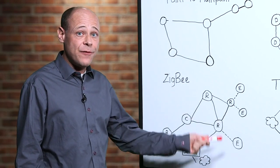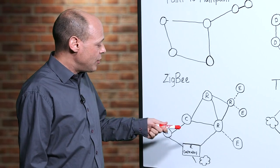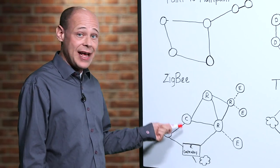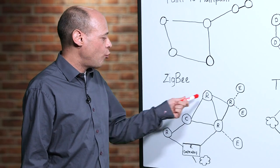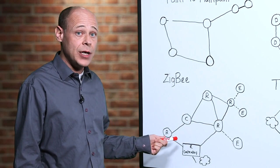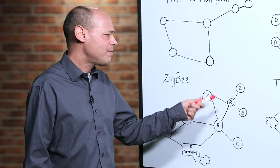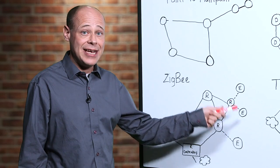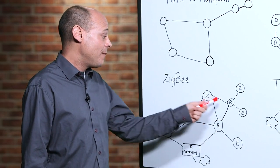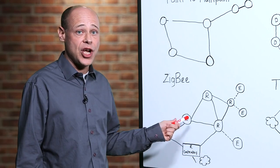Zigbee uses radios that are in different defined roles. So there are coordinators, which set up the network and then allow routers and end devices to join. Router radios, which can support maybe up to 20 or so end devices each, and can route data along the network between each other.